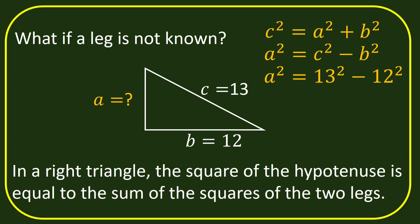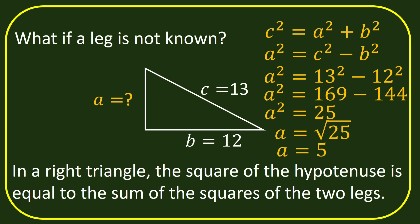13 squared is 169, while 12 squared is 144. We subtract 169 by 144, and the answer is 25. So a squared is equal to 25. Then we have a is equal to the square root of 25, and that is 5. So finally, a is equal to 5.